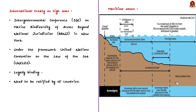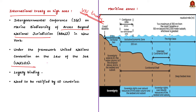Our topic of discussion is the First International Treaty to Protect the High Seas. The UN adopted the world's first international treaty to protect the high seas. It was adopted by the International Conference on Marine Biodiversity of Areas Beyond National Jurisdictions. The High Seas Treaty aims to take stewardship of the ocean on behalf of present and future generations. It is adopted under the framework of UNCLOS and is legally binding in nature. It will enter into force after ratification by 60 countries.